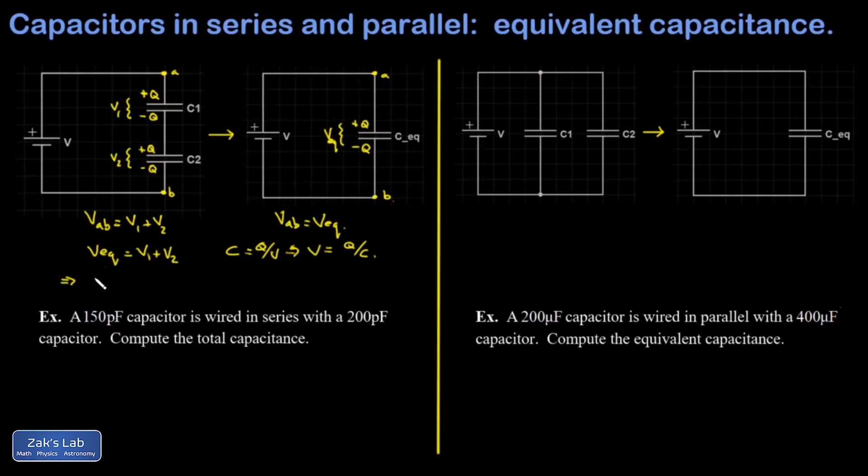So VEQ, that's given by Q over CEQ. V1, that's given by Q over C1, and V2 is given by Q over C2. And I arrive at my standard formula for computing the equivalent capacitance of a series combination of capacitors.